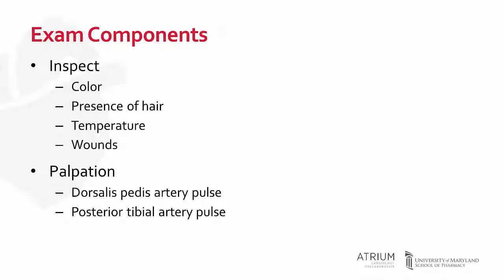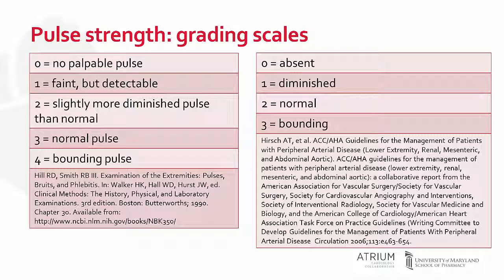The posterior tibial artery comes off the popliteal artery and is rarely congenitally absent. When evaluating the pulse, it is important to document the strength of pulses and especially look for differences in strength between the feet. If one foot has a weaker pulse than the other, that may signal this person requires further evaluation. It becomes especially important in patients with known peripheral arterial disease that we are rating the strength of their pulses, and if they are diminishing over time, further evaluation is warranted.